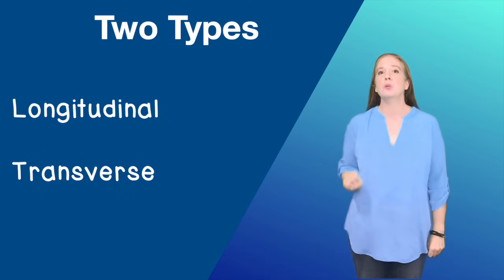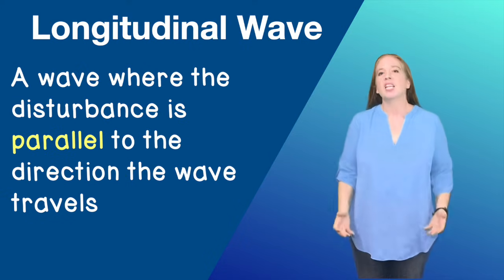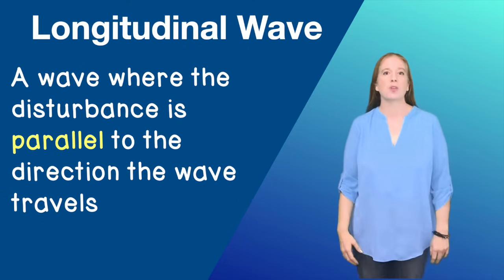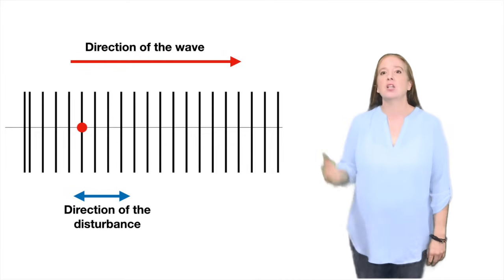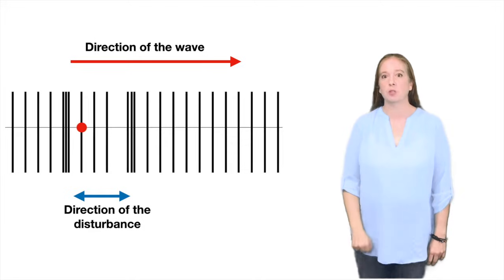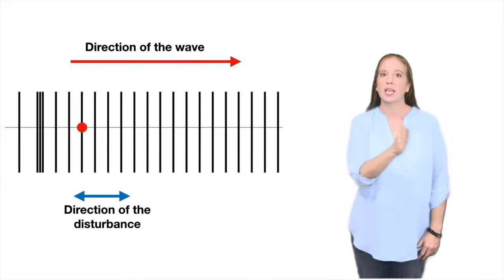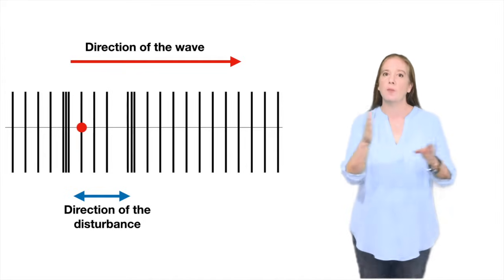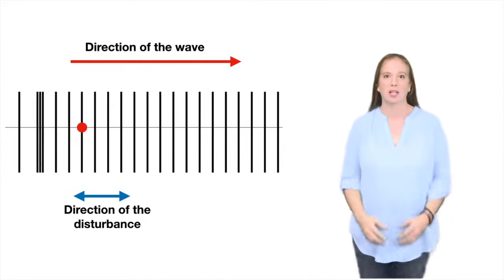There are two types of mechanical waves: longitudinal and transverse. A longitudinal wave is a wave where the disturbance is parallel to the direction the wave travels. Now look at this red dot representing the disturbance. Notice how the wave is moving left to right, and the red dot is also moving left to right. The two directions are parallel to each other.